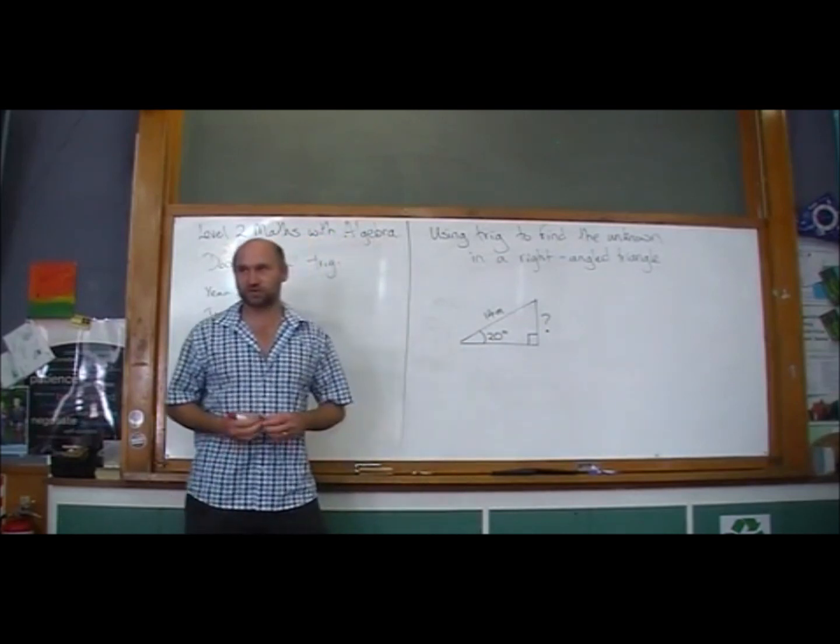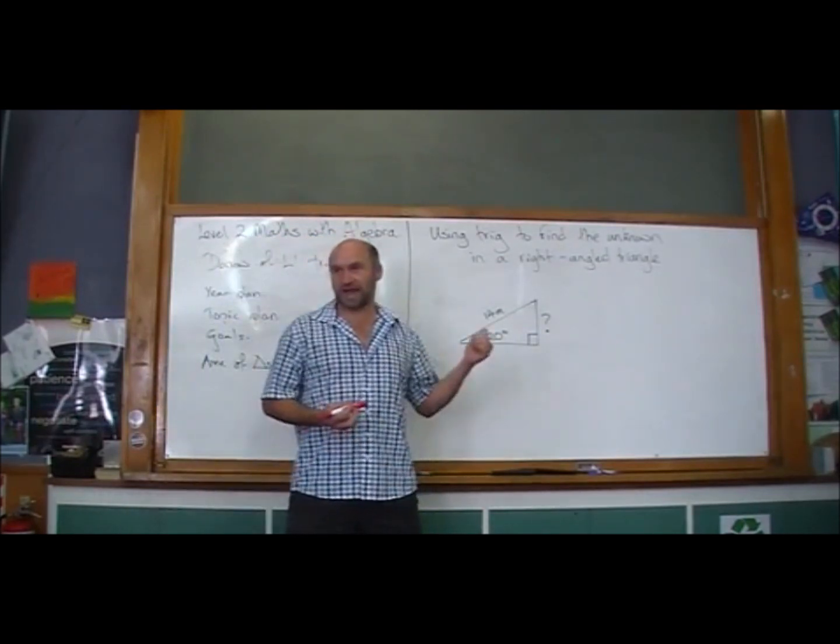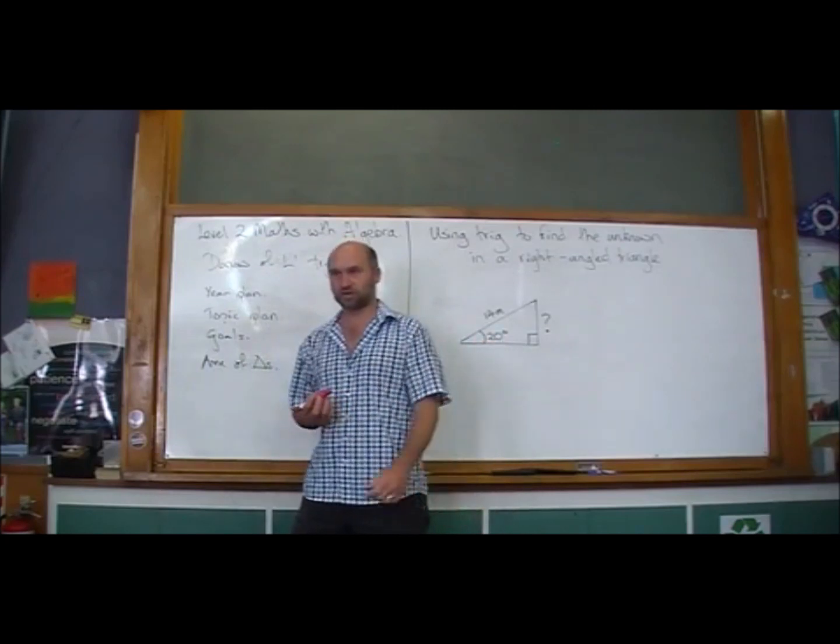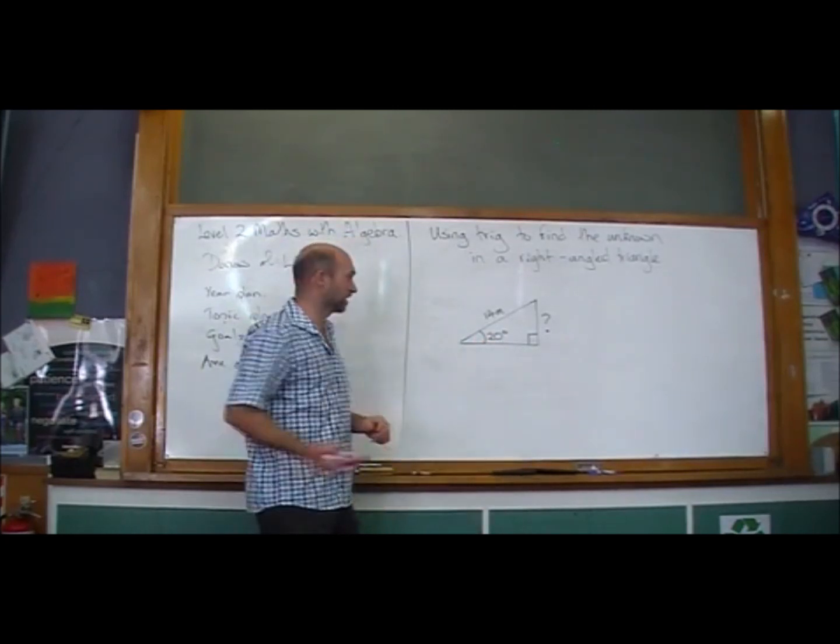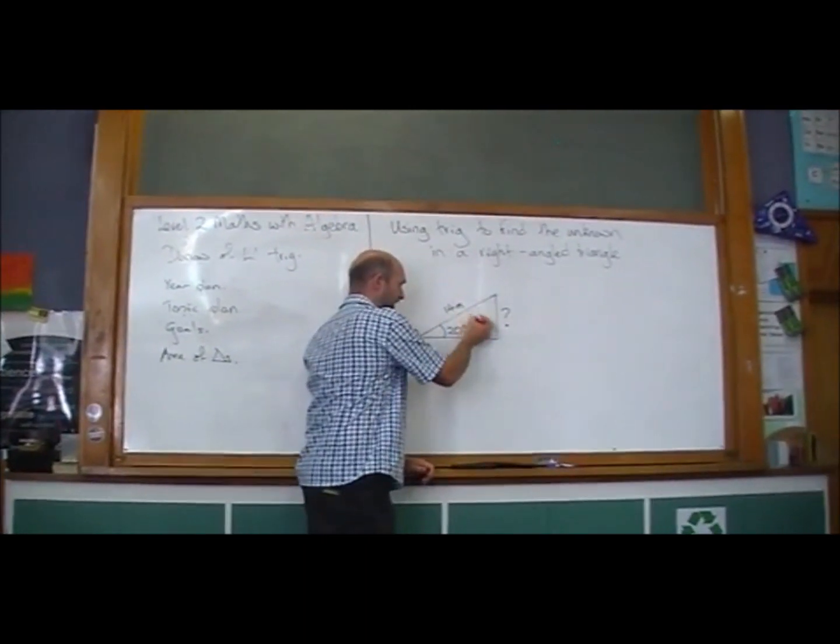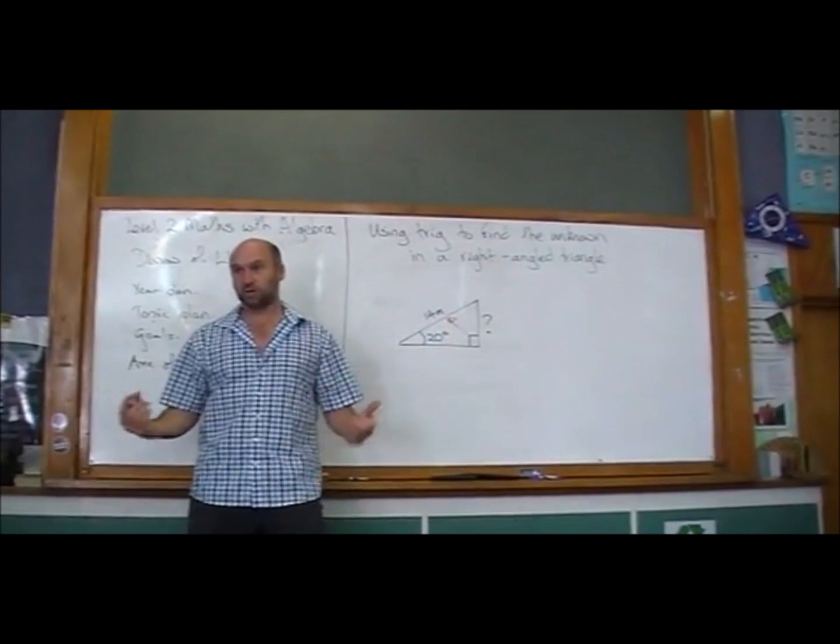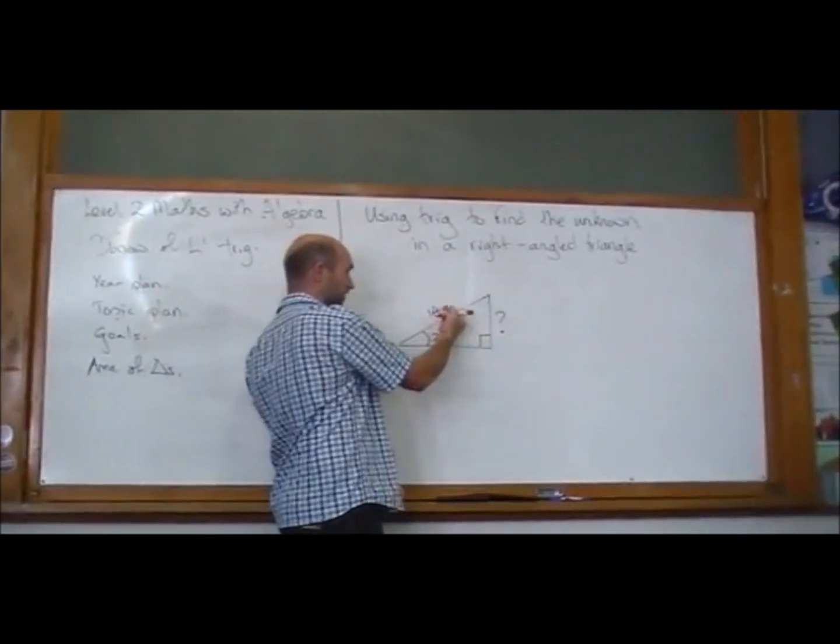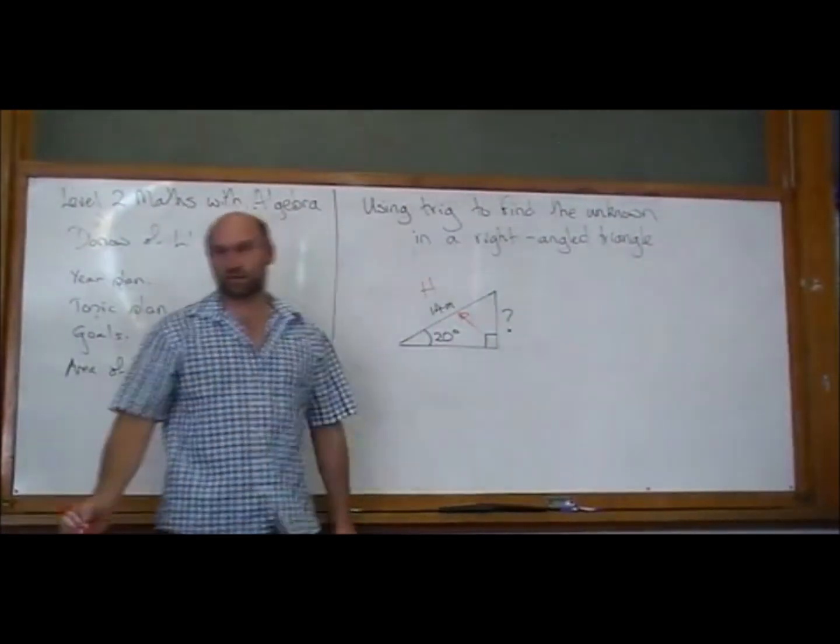The key thing we have to do to make that decision is label up the H, the O, and the A, the hypotenuse, the opposite, and the adjacent. The hypotenuse, the way to find that is it's always opposite the right angle. It's the longer side of the triangle. So if you go across from the right angle, that's the hypotenuse.